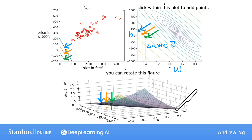Now, the bottom of the bowl, where the cost function j is at a minimum, is this point right here, at the center of these concentric ovals.